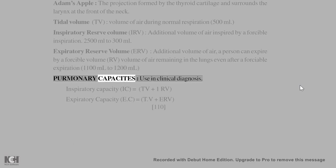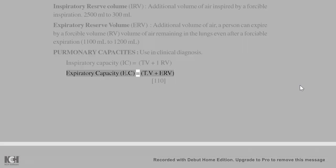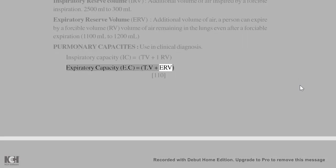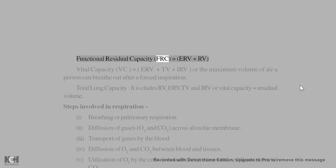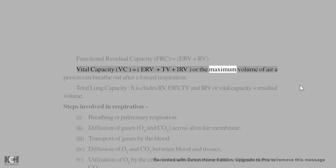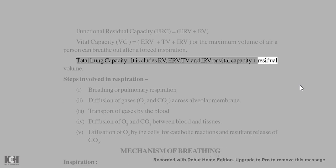Pulmonary capacities, used in clinical diagnosis. Inspiratory Capacity (IC) = TV + IRV. Expiratory Capacity (EC) = TV + ERV. Functional Residual Capacity (FRC) = ERV + RV. Vital Capacity (VC) = ERV + TV + IRV, or the maximum volume of air a person can breathe out after a forced inspiration. Total Lung Capacity includes VC and RV, or the sum of TV, IRV, ERV, and RV.